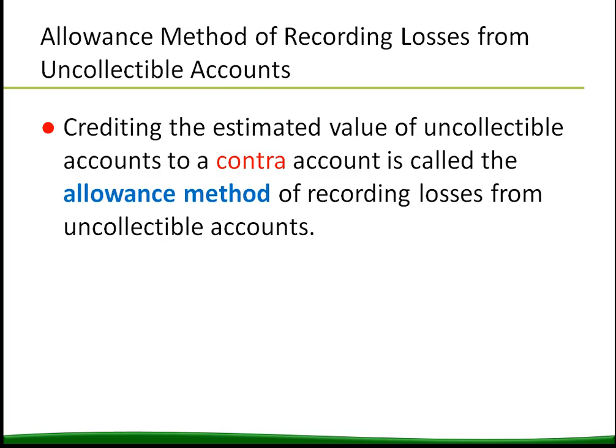A business can't know the exact amount of money it's going to fail to collect from uncollectible accounts. GAAP requires a business to record an estimate of its uncollectible accounts. Estimating uncollectible accounts expense at the end of a fiscal period records the expense in the same period as the related revenue. Crediting the estimated value of uncollectible accounts to a contra account is called the allowance method of recording losses from uncollectible accounts.